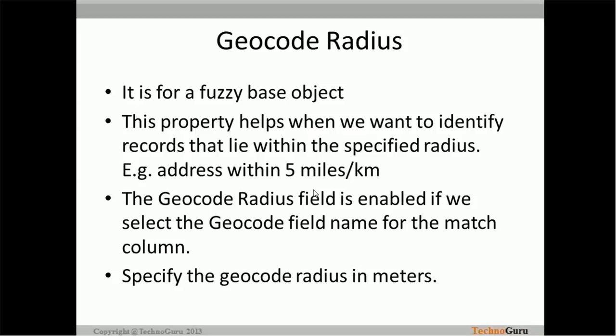What is geocode radius? It is a property used for the fuzzy base object. A base object can be declared as fuzzy or exact. If you declare any base object as fuzzy, then the geocode radius property will be available to use. This property helps when you want to identify records that lie within a specified radius — for example, if you want to match records with an address within five miles or two miles. The geocode radius field is enabled if you select the geocode field name for the match column.